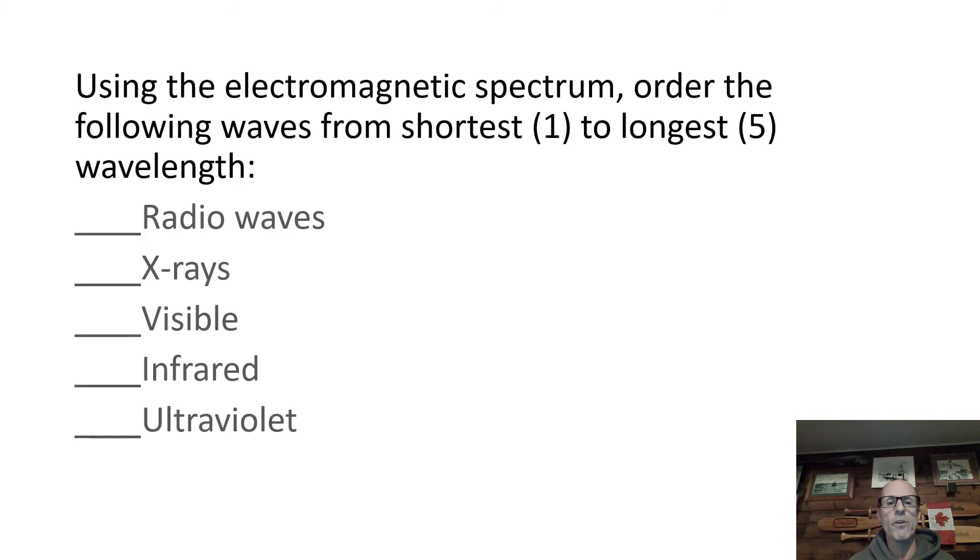Now, can we order these in order from shortest to longest? I hope you can. The shortest wavelength that we have in the list should be the x-ray because it's the most dangerous and short waves are more dangerous. The next shortest wave would be the ultraviolet or the UV light that the sun produces. That's right next door to what we see. So the visible spectrum is there, kind of in the middle.